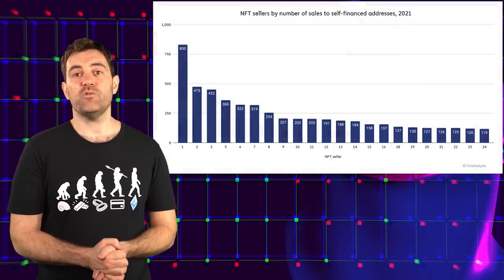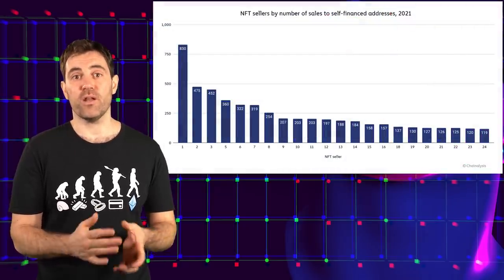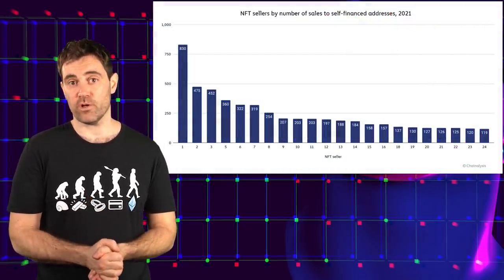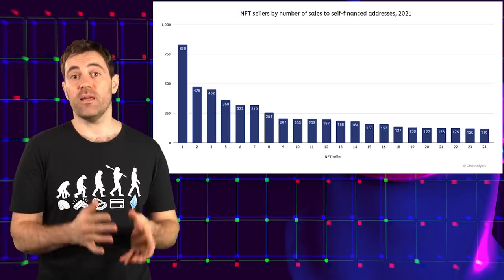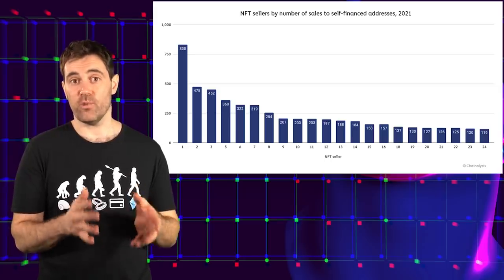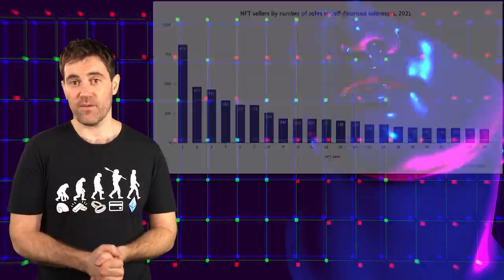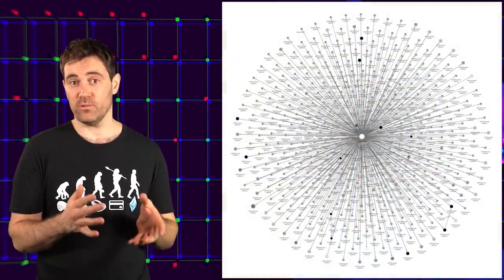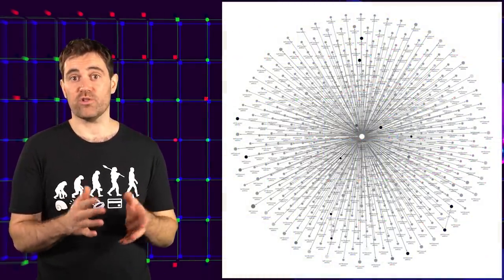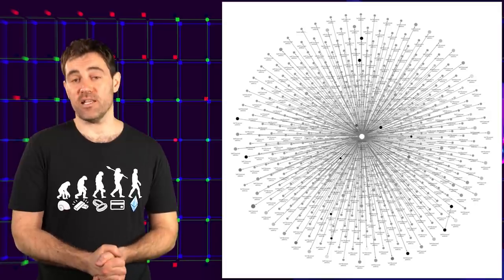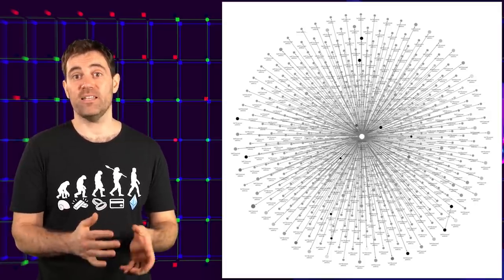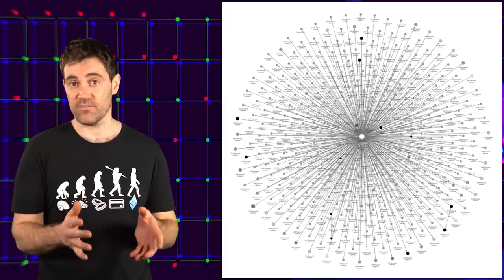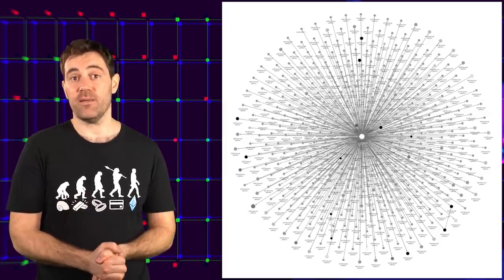Chainalysis identified 262 users that frequently engaged in NFT wash trading, with frequently meaning more than 25 trades with wallets they own and operate. Funnily enough, wash trading isn't all that profitable after you account for all the gas fees, and the largest wash trader actually ended up losing over $8,000 from their 830 wash traded sales. This is what you're seeing in the image, by the way.